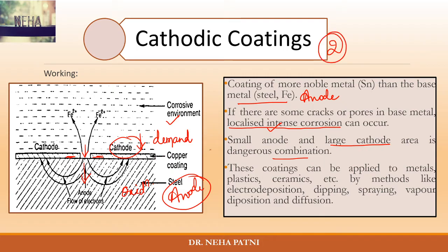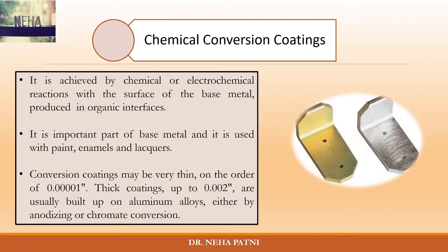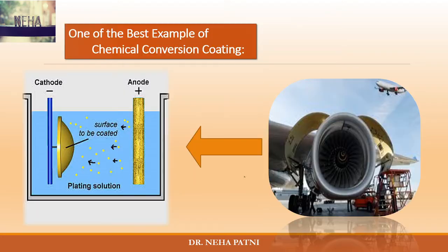In cathodic coating you coat with a more noble metal, while in anodic coating you coat with a more active metal. The next type is chemical conversion coating, which is neither anodic nor cathodic — it involves a chemical or electrochemical reaction with the base metal. Organic materials are coated on the surface and converted into a stable material that does not undergo corrosion. Another example is plating a metal with another metal so that on reaction it converts into a stable compound.